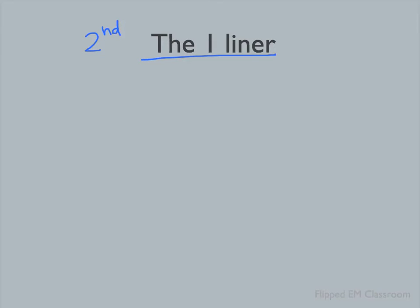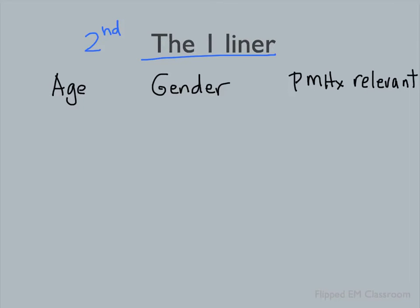The one-liner includes the age and gender of the patient, and something in the past history that might be relevant to their chief complaint. The first two should be obvious. Number three requires a bit of thought — it requires that we pull from the previous history of the patient that might be relevant to why they're presenting today.